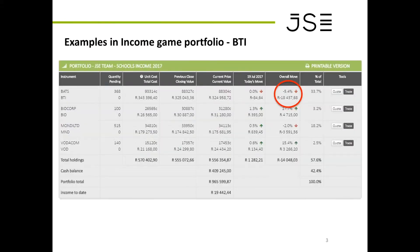The first example is in the income game portfolio where you can see that BATS, or BTI, has overall lost 5.4% so far, which is a total loss of 18,000 rand — and that's only with 5% down, because 343,000 rand was spent. The question is: at what stage do you cut your loss? That's what I'm going to try and help you with today.